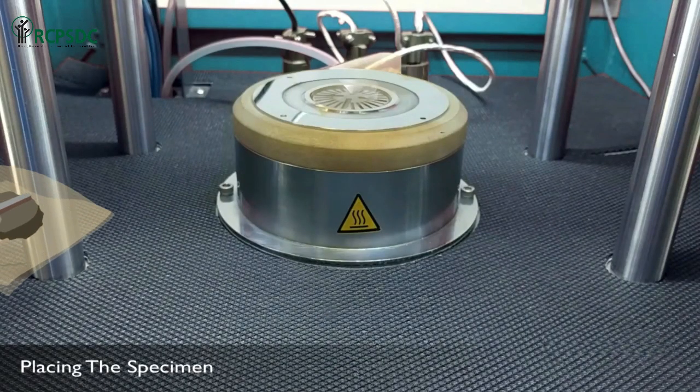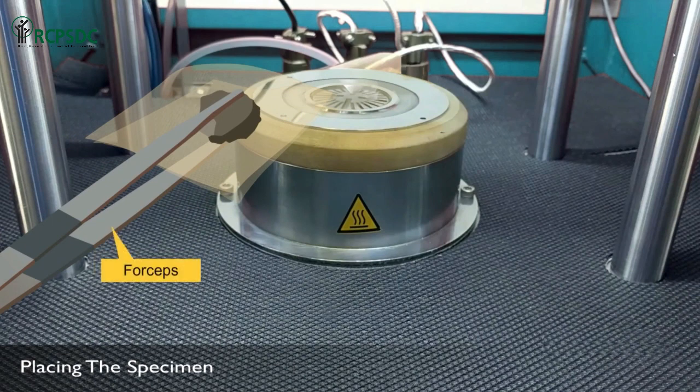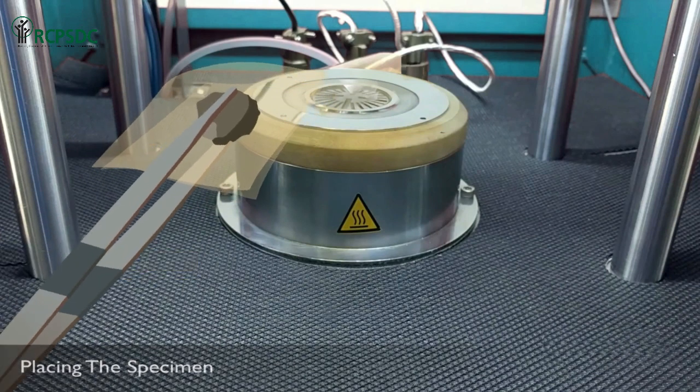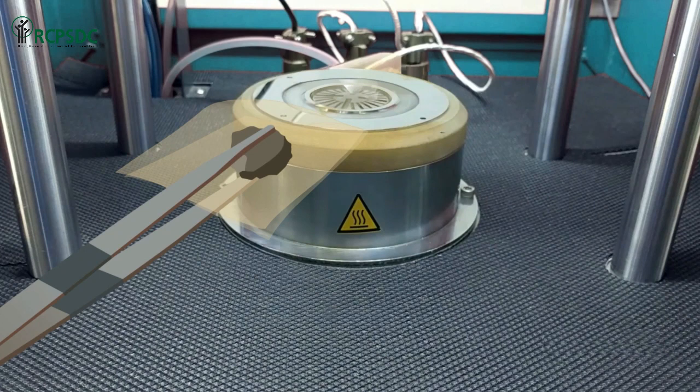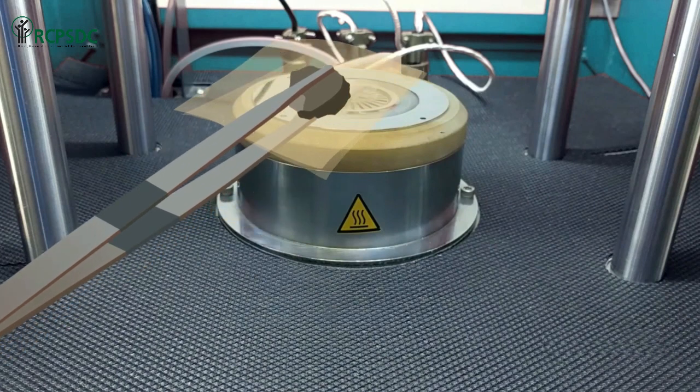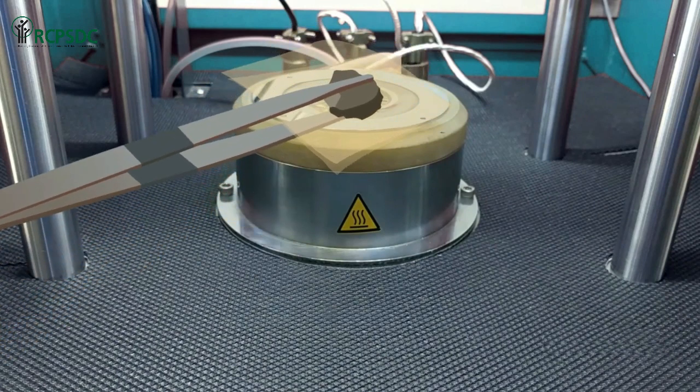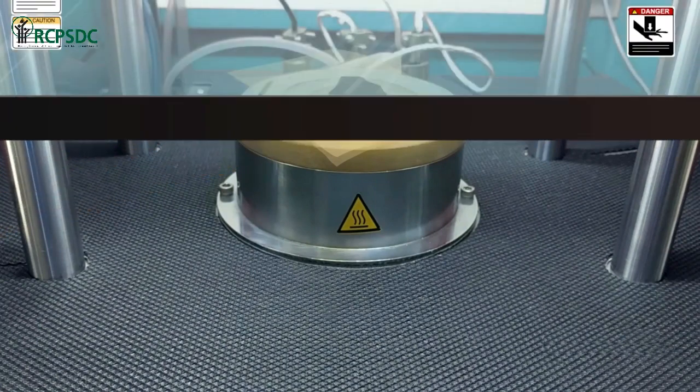Keep a piece of plastic sheet on the top and bottom of the test sample before keeping it on the machine's test block. Place the specimen on the lower die.